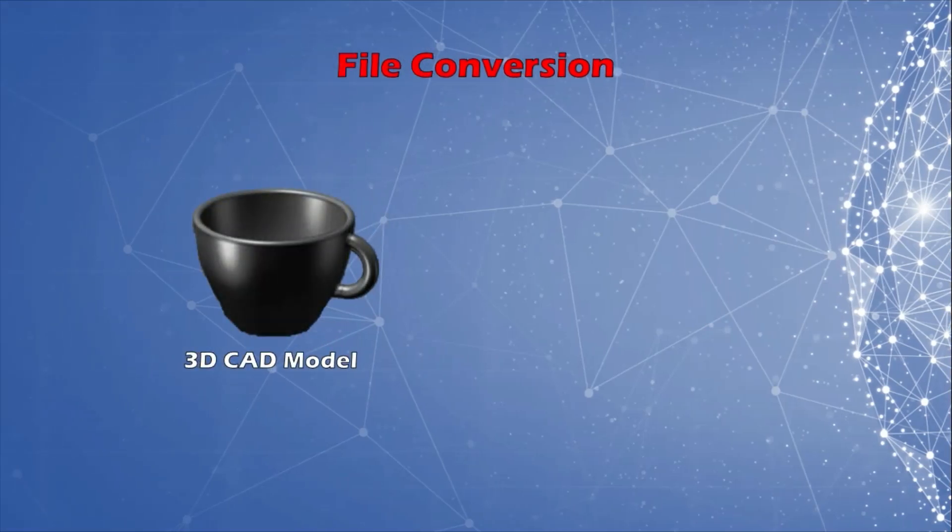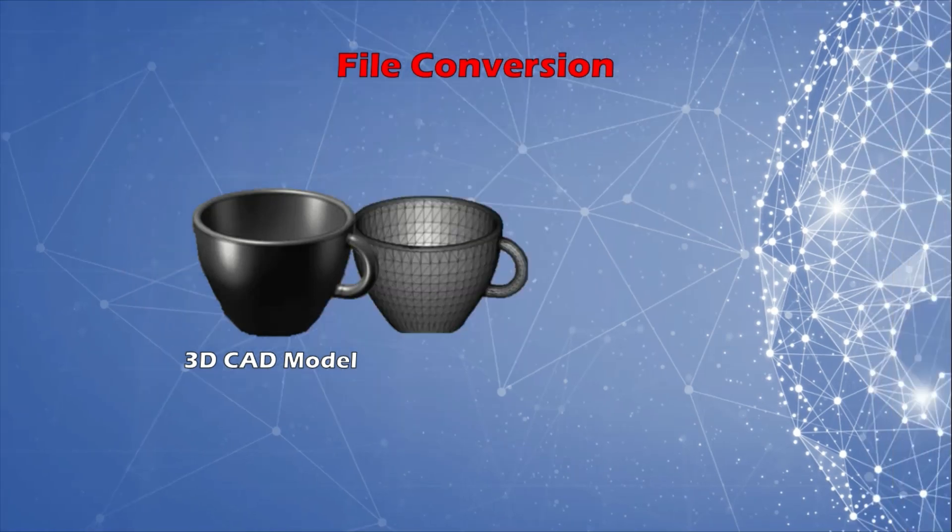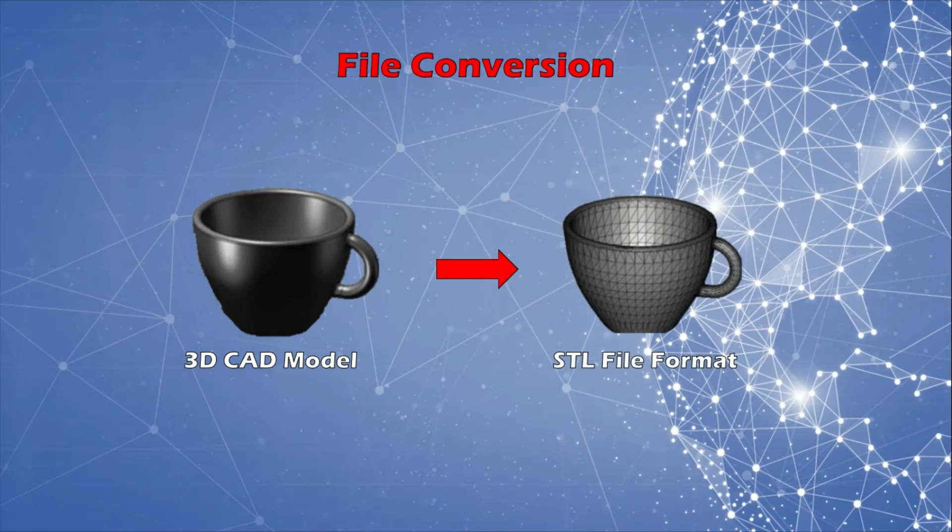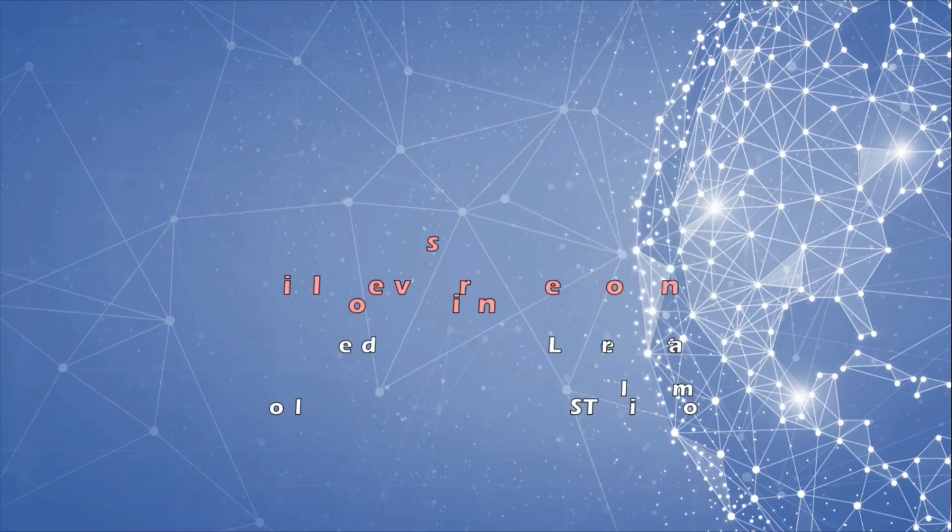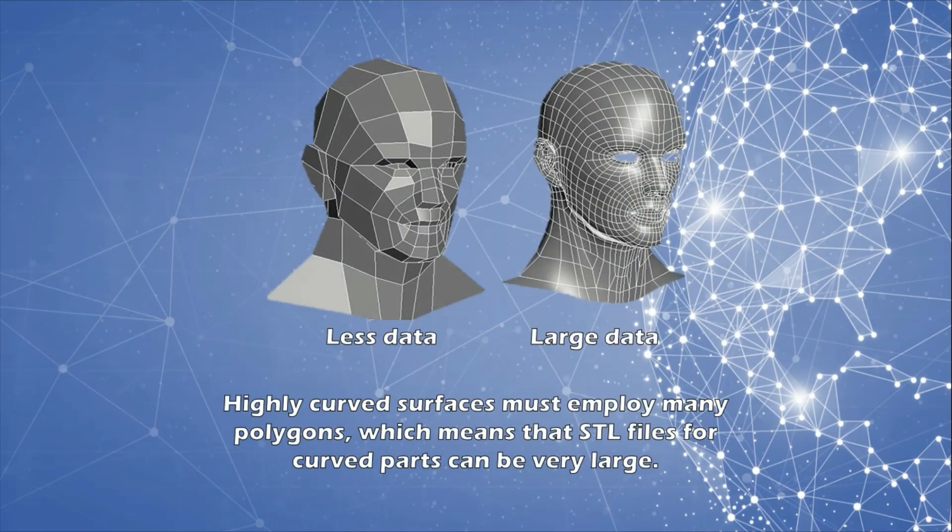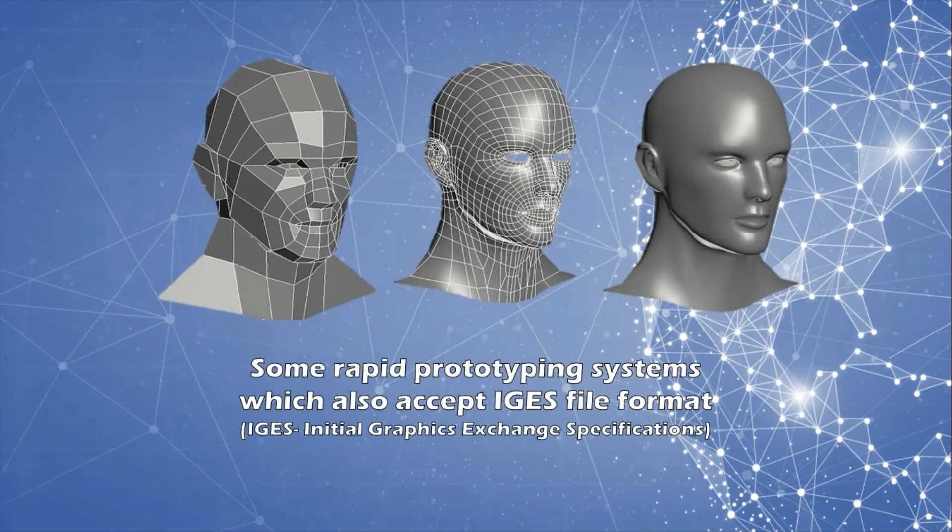Now the digital model is converted into a format known as STL, stereo lithography file format. The STL file format approximates the surfaces of the model by polygons. Highly curved surfaces must employ many polygons, which means that STL files for curved parts can be very large. However, there are some rapid prototyping systems which also accept IGES file format, Initial Graphics Exchange Specifications.